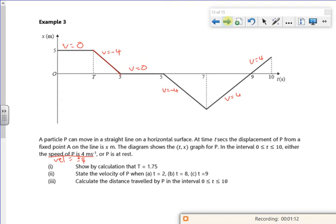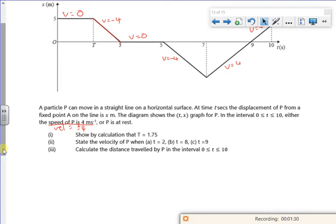So what have we got to do? Show by calculation that t is 1.75. So from time t through to 3 seconds, I know my gradient is minus 4. I know that that distance there is 3 minus t. I know that there is 5.